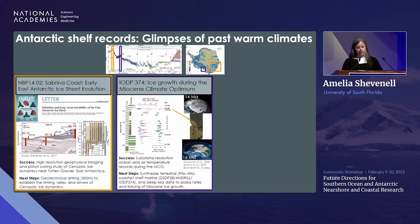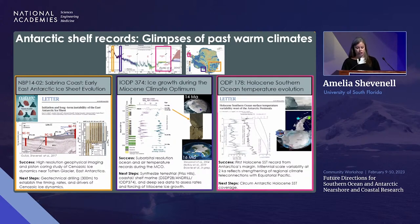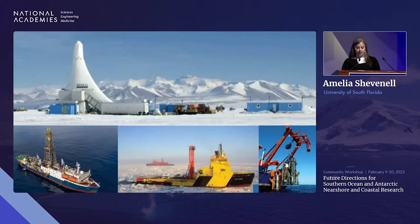The next steps are to synthesize records from the terrestrial to the deep sea to understand how ice sheets evolved in the Ross Sea area over the past 14 million years. We've also been able to reconstruct Holocene temperatures at high resolution comparable to the ice core records — including a sea surface temperature record from Palmer Deep, one of the first sea surface temperature records around Antarctica. We can only do this from ships, and we have several science priorities including understanding East Antarctica at the catchment scale and past ice retreat rates.